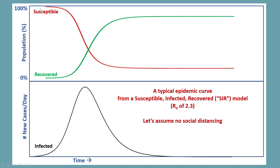Corresponding to that curve are the susceptible people and the recovered people. At the beginning, everyone is susceptible — they've never had this disease before, such as COVID-19, and no one is immune and no one has recovered because no one has had it yet. As you begin to go through this epidemic, there are people who recover, and they will start recovering. At the same time, because they're recovering and if they develop immunity, the susceptible fraction goes down. What is the effect of the susceptible fraction being reduced?